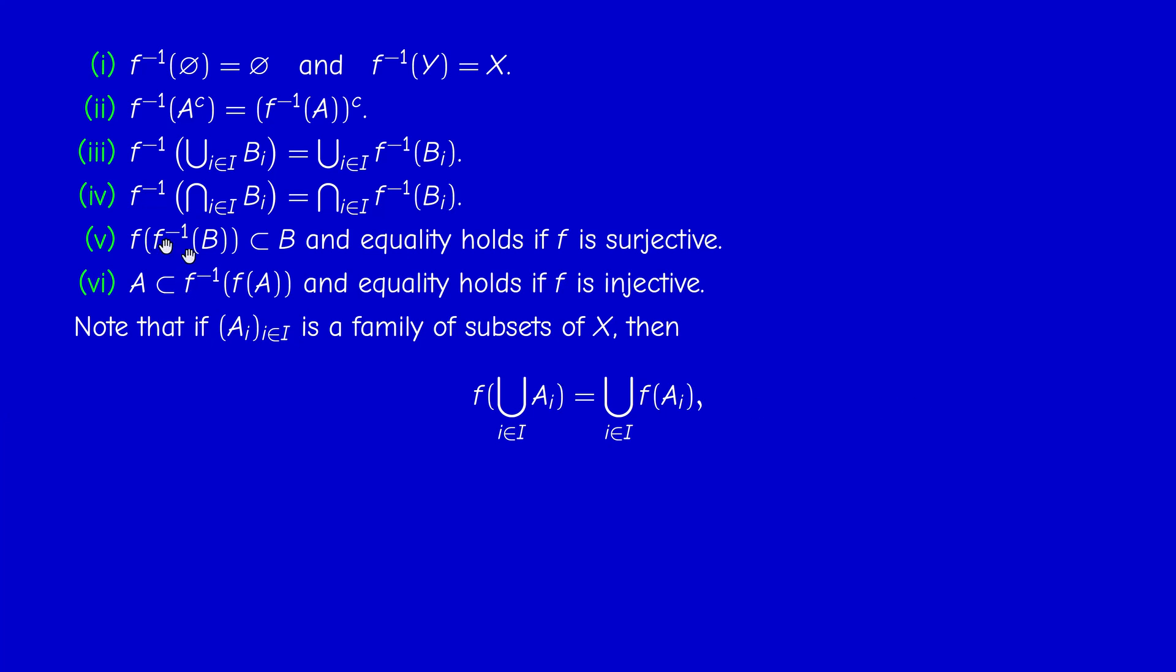The direct image does not satisfy all these properties. The direct image of the empty set is the empty set. The direct image of X is not necessarily equal to Y, unless it's surjective. Property one is not satisfied by the direct image. Property two is not satisfied by the direct image. Property three, it is. The direct image of the union is equal to the union of the direct images. The direct image of the intersection is only contained in the intersection of the direct image. And equality holds if F is injective.